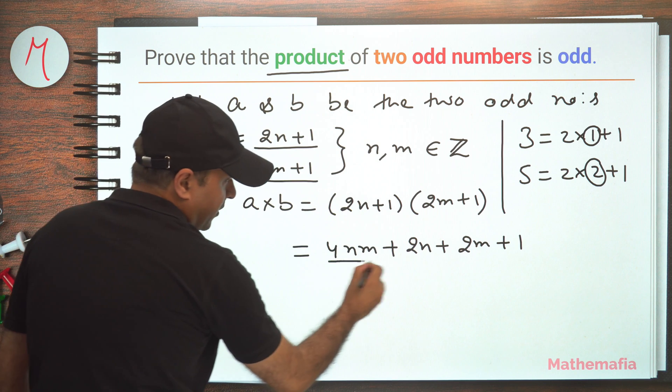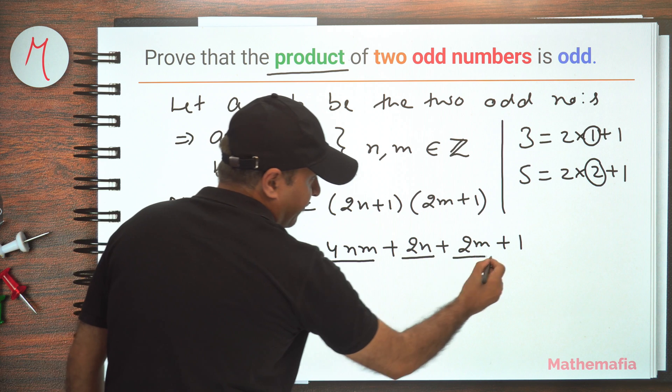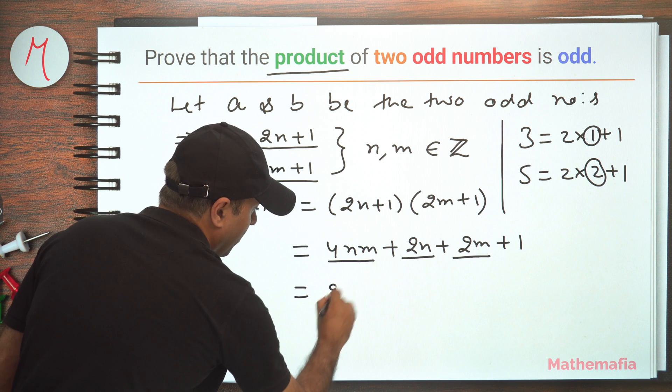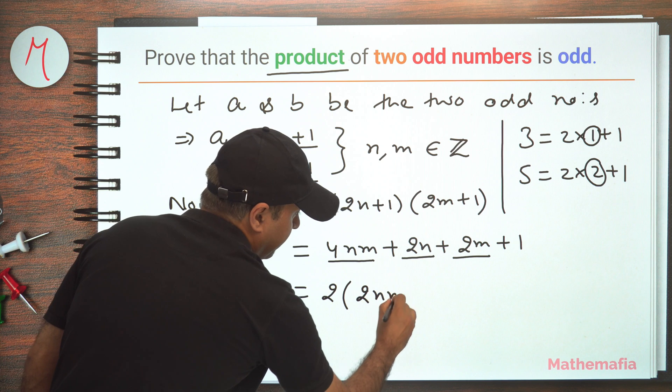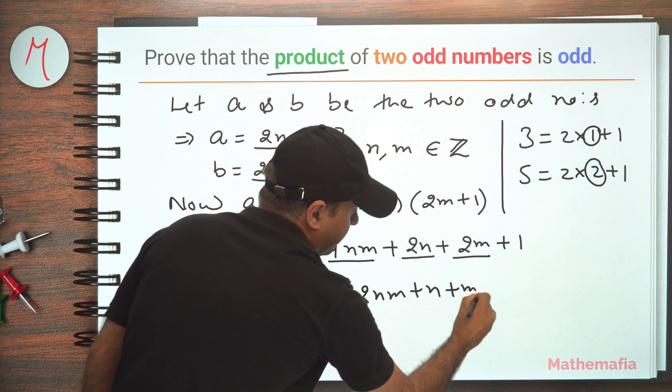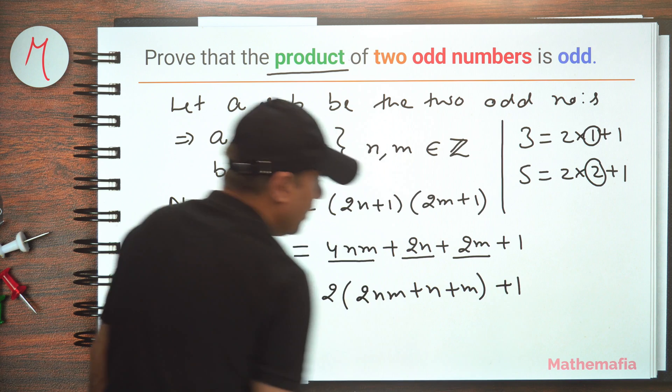Now this is an even number, this is an even number, this is an even number. So let's take 2 common, and inside it will be 2nm plus n plus m, and then plus 1.